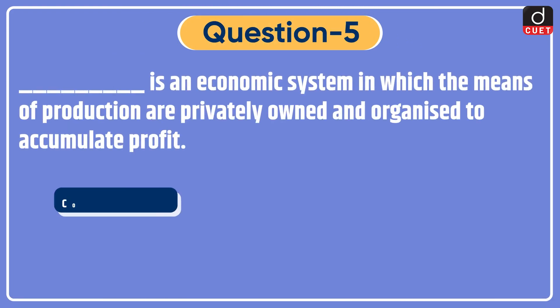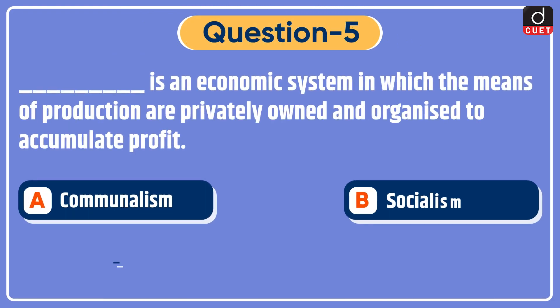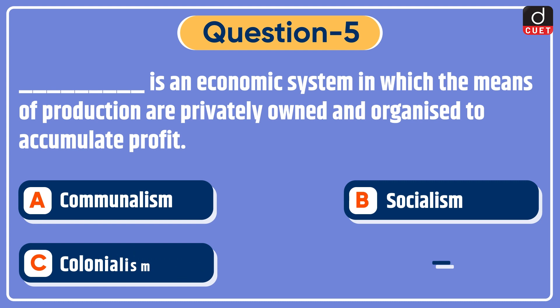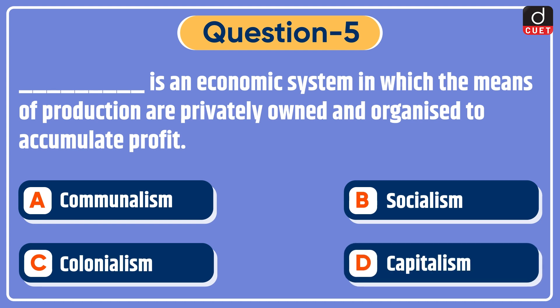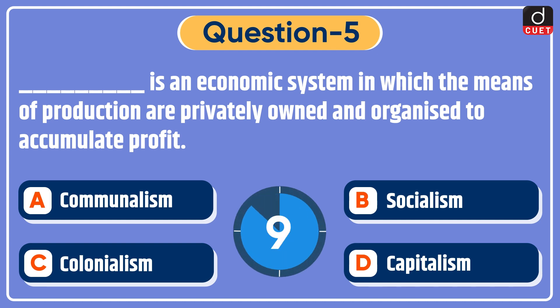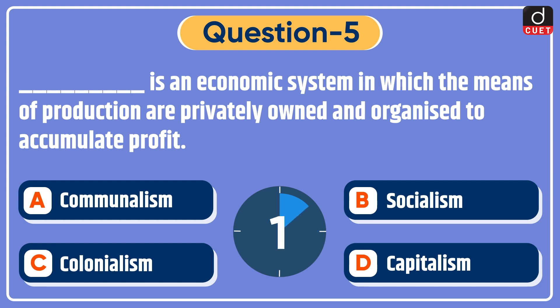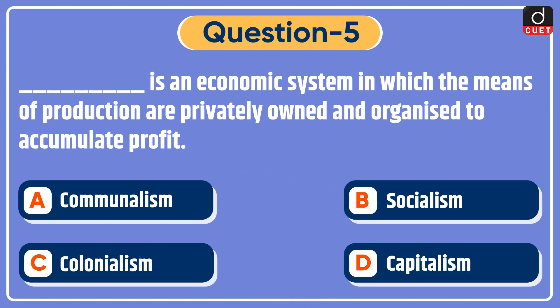Next question: dash is an economic system in which the means of production are privately owned and organized to accumulate profit — Communalism, Socialism, Colonialism, or Capitalism? The correct answer is option D, Capitalism.